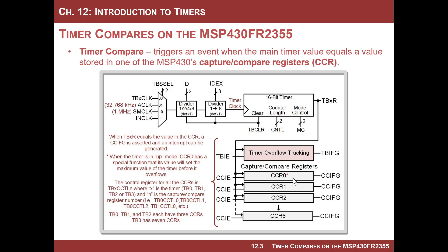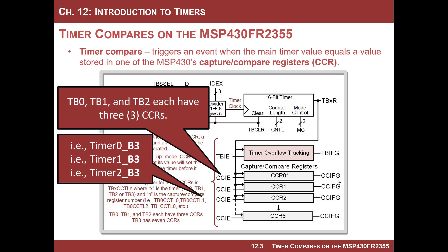The beauty of this is that you can choose whatever value you want to put in here, which allows very precise timing. You don't have to wait for the 2-to-the-N interval. For example, if you want a flag generated every 0.5 seconds, you calculate the number of counts that would take for the clock you're using, find that exact count value, put it in there, and every time the timer reaches that value it will set a flag.